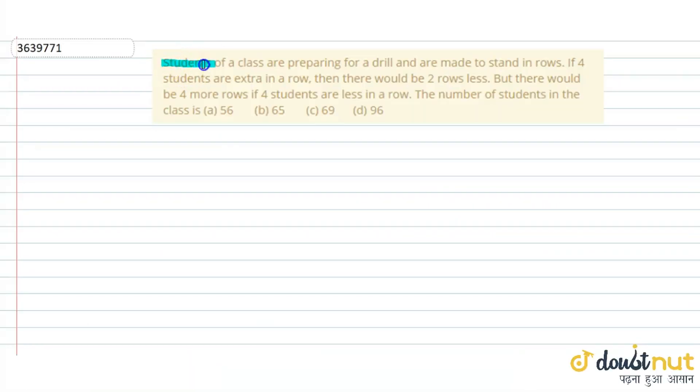The question is: students of a class are preparing for a drill and are made to stand in rows. If 4 students are extra in a row, then there would be 2 rows less. But there would be 4 more rows if 4 students are less in a row. Find the number of students in the class. Let the number of rows be x and number of students per row be y.